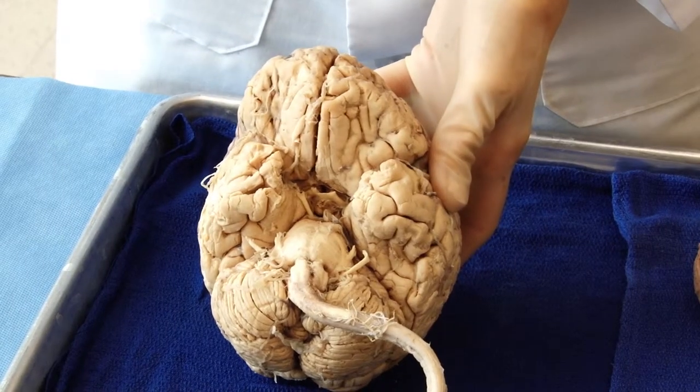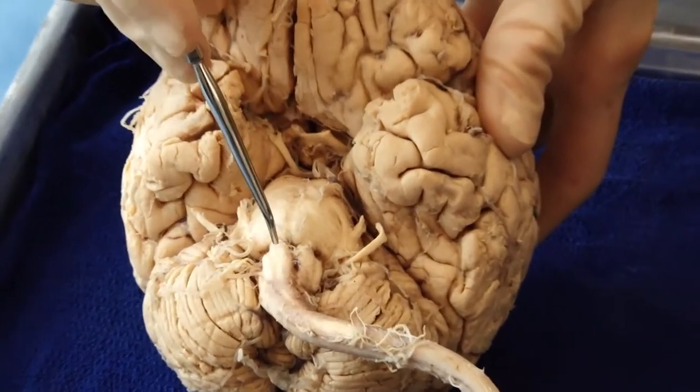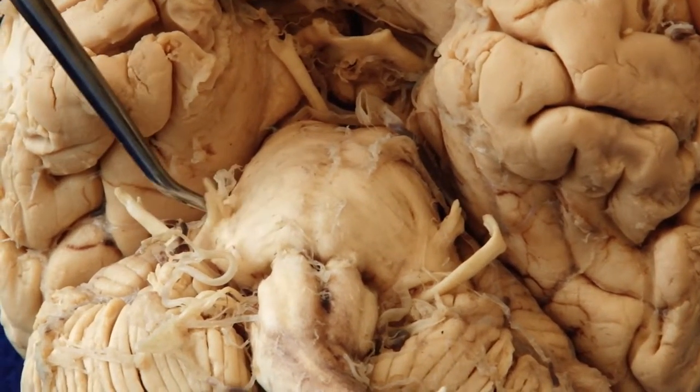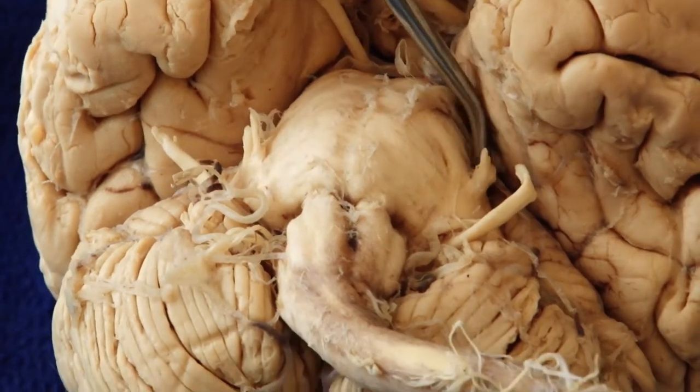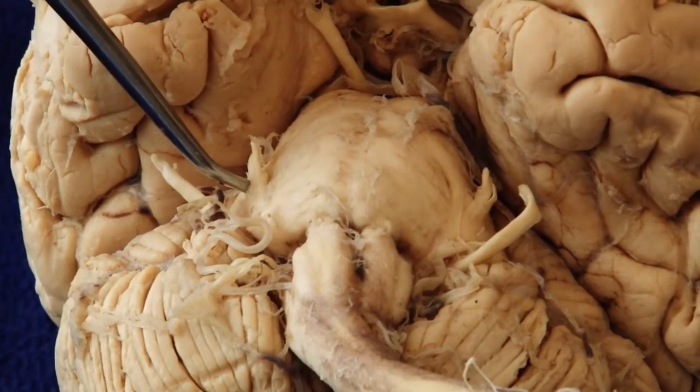So now we are looking at the ventral surface of the brain, and the pons extends from here to here. And right in the middle of the pons is the large, the largest of all the cranial nerves, the large trigeminal nerve. So it comes in on the side of the pons on either side.